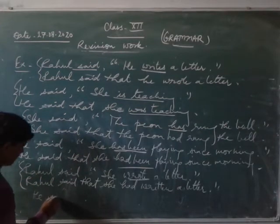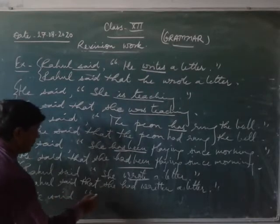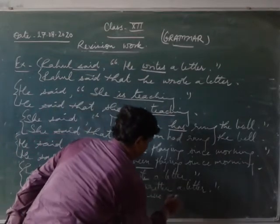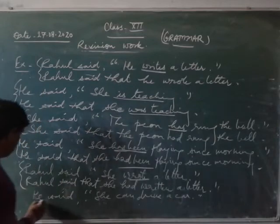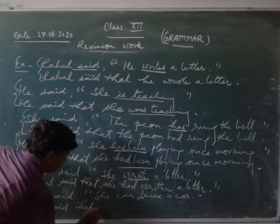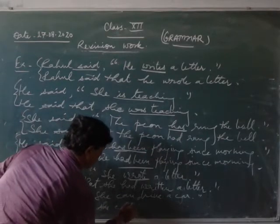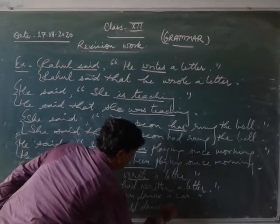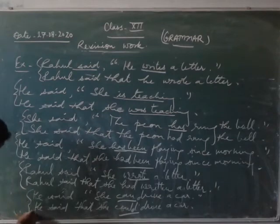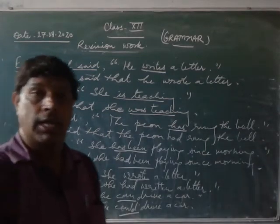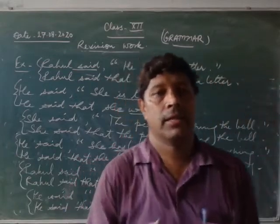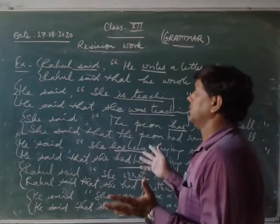One more example: 'I said, she can drive a car.' Since the reporting verb is in past tense, 'can' changes into 'could.' So the indirect narration becomes: 'He said that she could drive a car.' This is all for the first rule on the basis of tense.